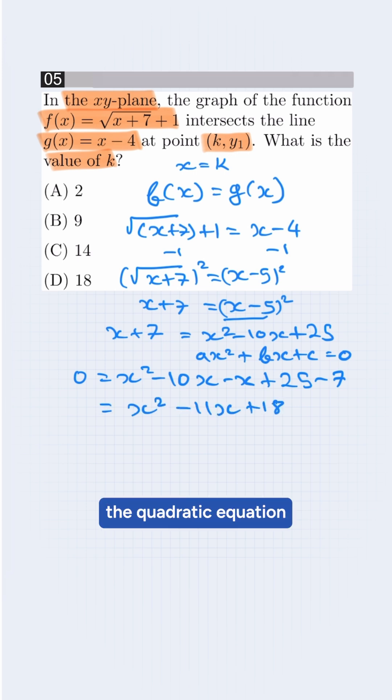Now we need to solve the quadratic equation by factoring. We find that number which multiplies to 18 and adds up to -11. Simplifying, we find (x-9) and (x-2) which is equal to 0.